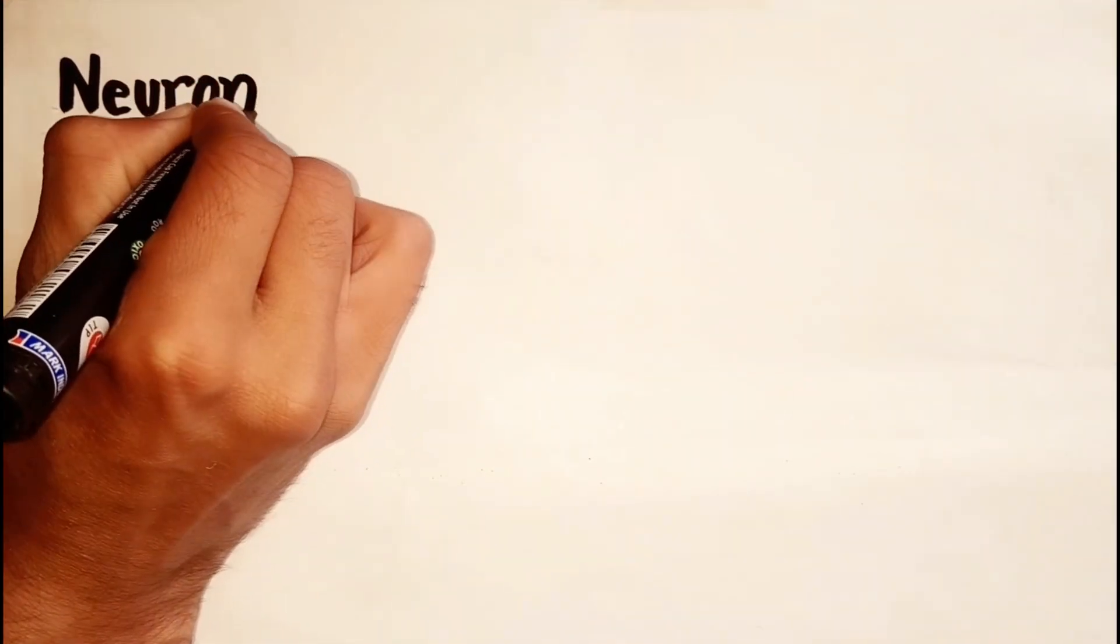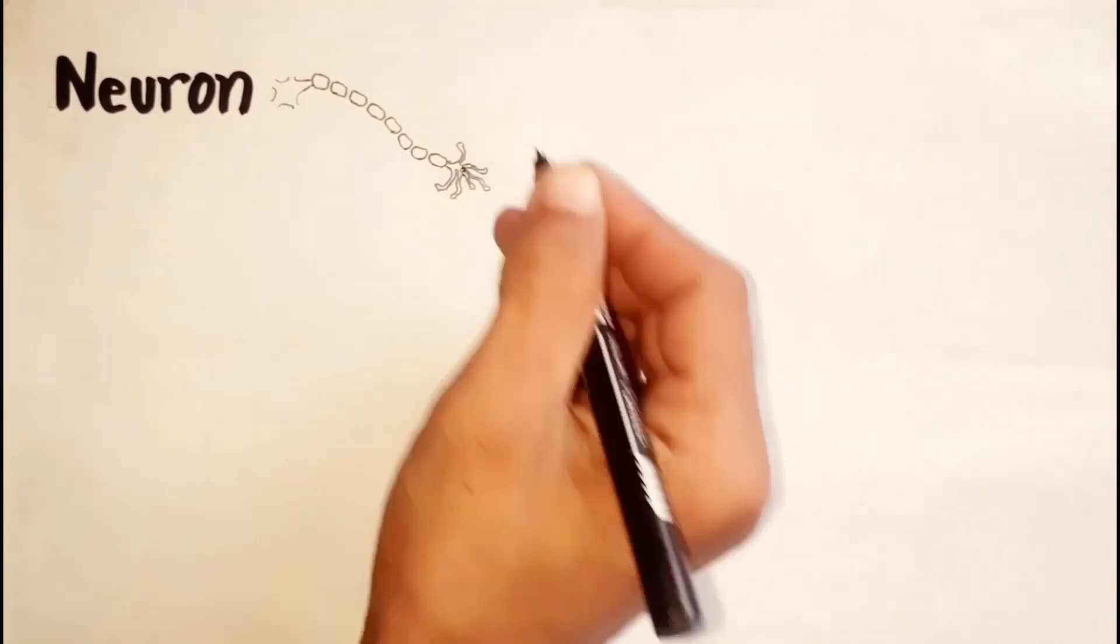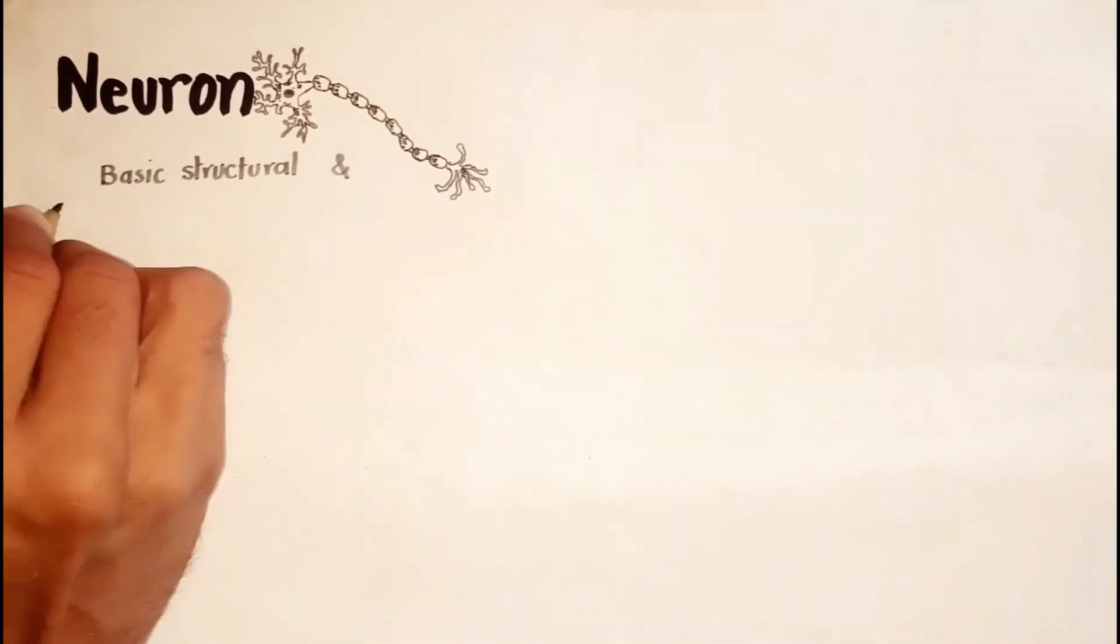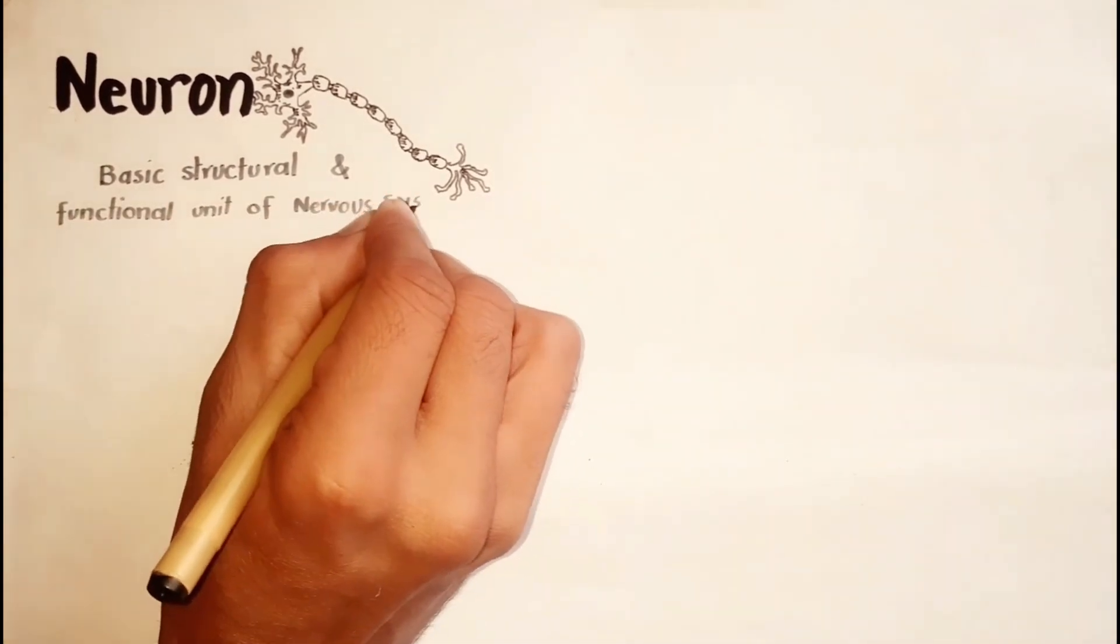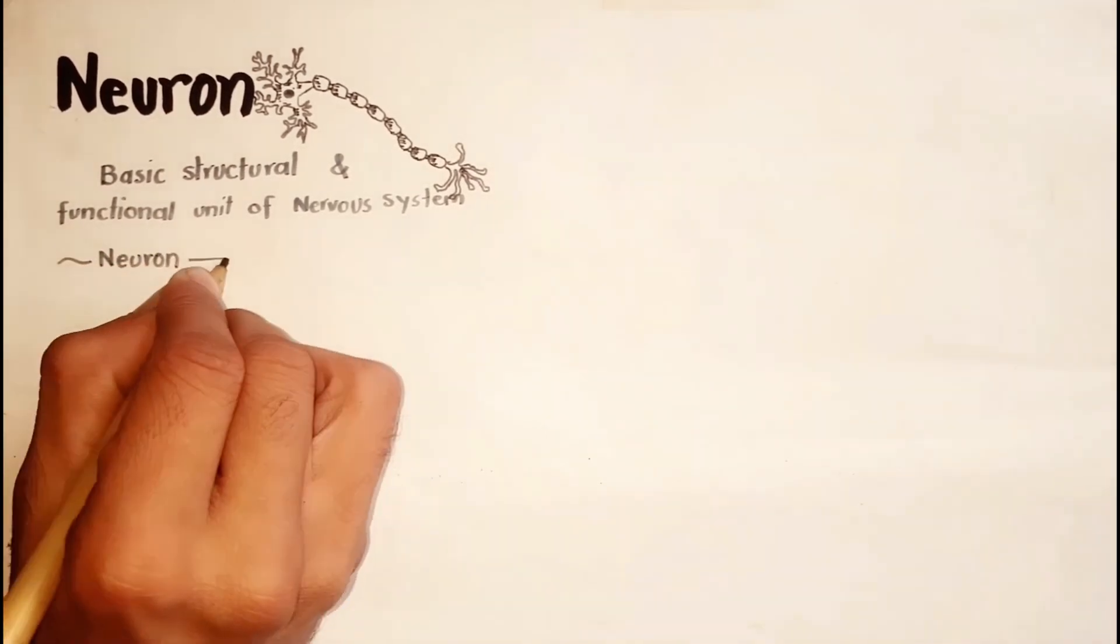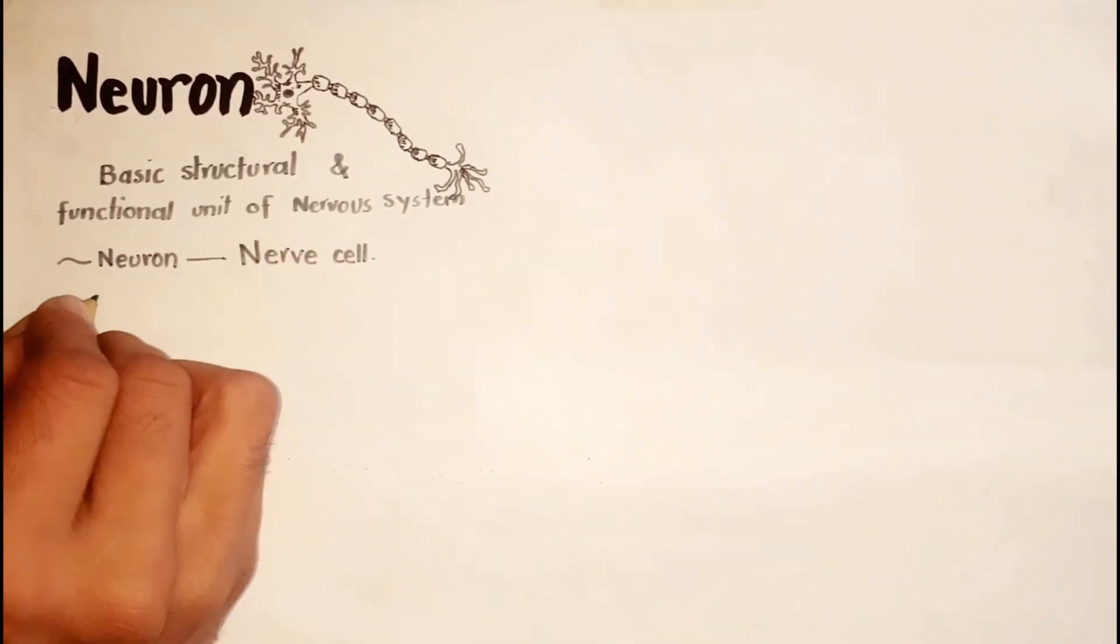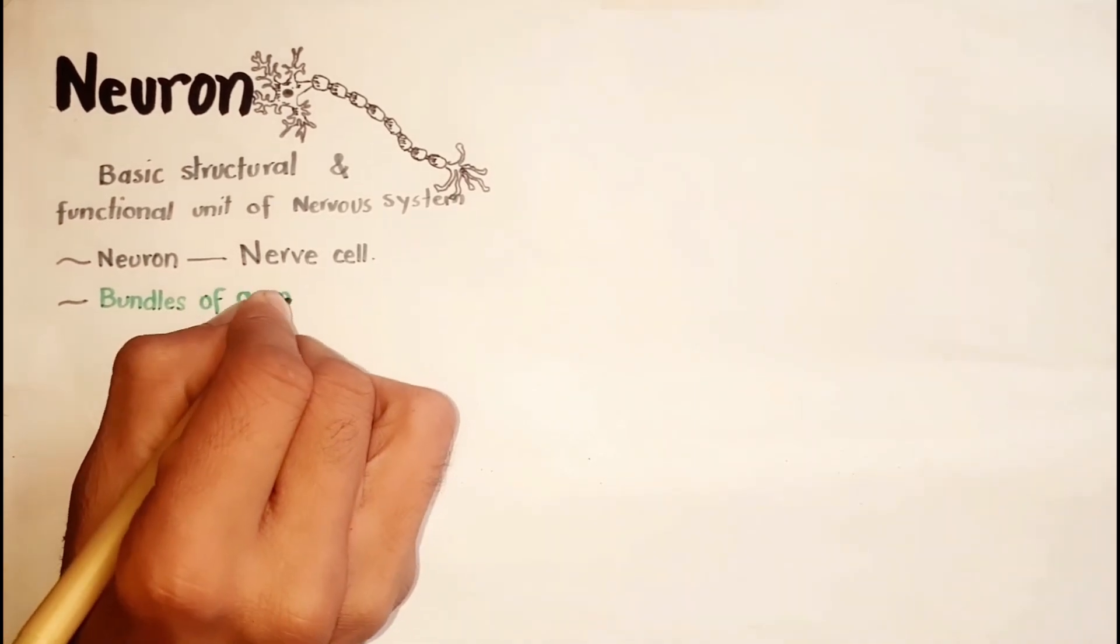The nervous system consists of a huge number of cells called neurons. Neuron is the basic structural and functional unit of the nervous system. Neurons are commonly referred to simply as nerve cells, and bundles of axons bound together are called nerves.